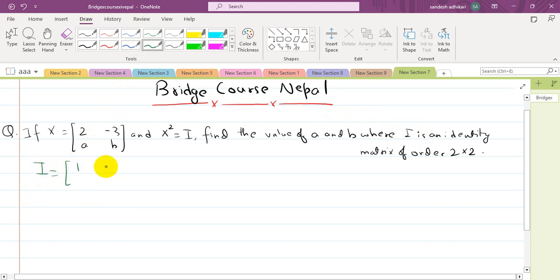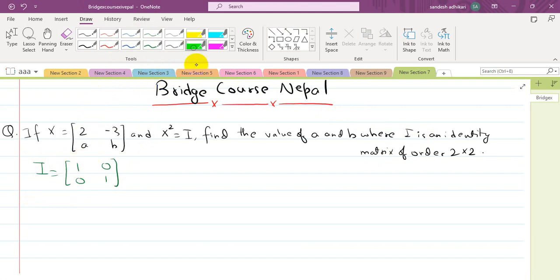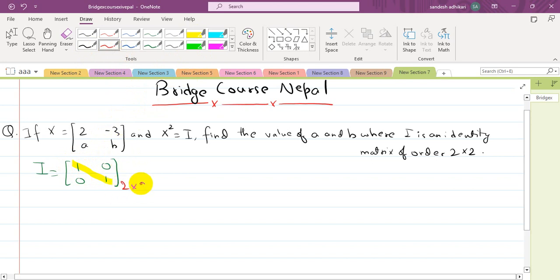So I equals [1, 0; 0, 1]. The identity matrix of order 2×2 is a matrix where the principal diagonal or leading diagonal elements are unity (one), and all other elements are zero.